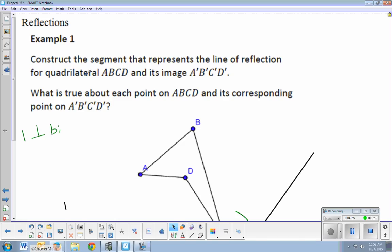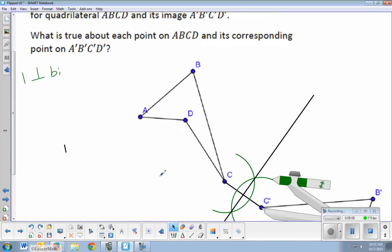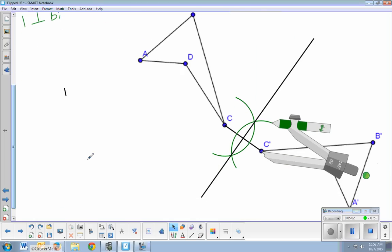What is true about each point on ABCD that corresponds to A prime, B prime, C prime, D prime? Well, because these are perpendicular bisectors, how we do this, that means that C and C prime are the same distance away from the line of reflection. And that's how symmetry works. That whatever this distance is, this is going to be the same. And that makes sense because this was a perpendicular bisector. And so I cut this line in half so the halves are equal.